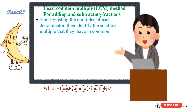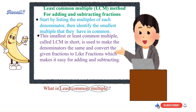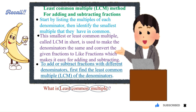When you are given 2 fractions to add or subtract, start by listing the multiples of each denominator and then identify the smallest multiple that they have in common. This smallest, or least common multiple, called LCM in short, is used to make the denominators the same and convert the given fractions to like fractions, which makes it easy for adding and subtracting. To add or subtract fractions with different denominators, first find the least common multiple of the denominators.